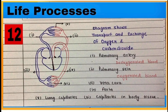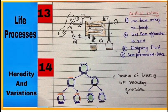Diagram 13 is an artificial kidney. If a person is suffering from kidney failure, then this artificial kidney is used to remove urea from the blood.